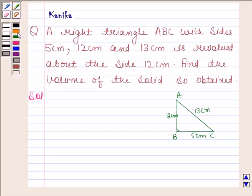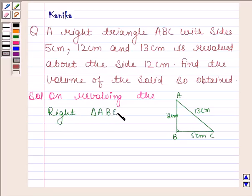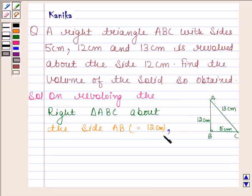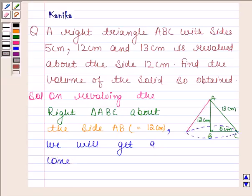So, on revolving the right triangle ABC about the side AB, which is equal to 12 cm, we will get a cone like this.